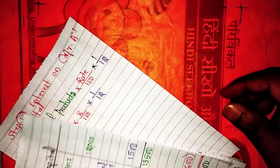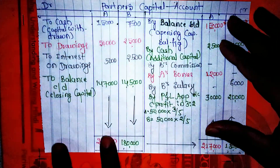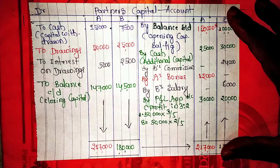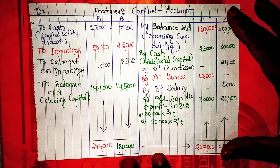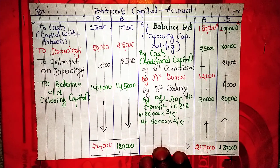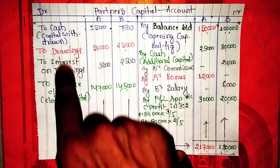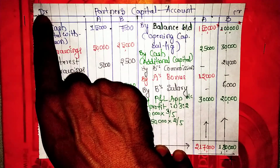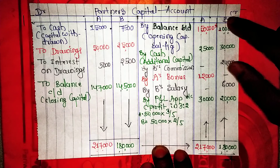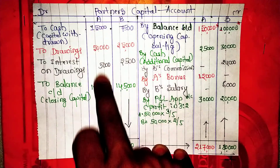Understood? Now I will start the last one. Opening capital is 8. This is very simple. Capital account decreases on the debit side and increases on the credit side. After finishing, make 50.